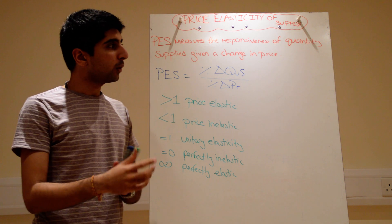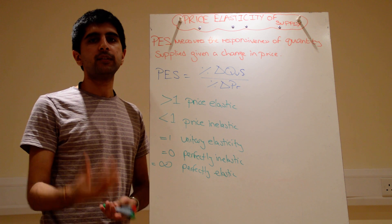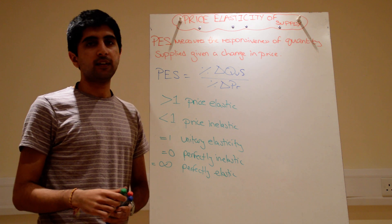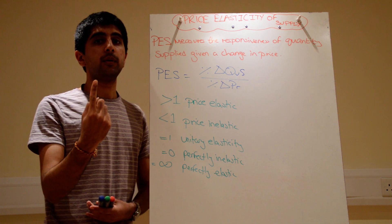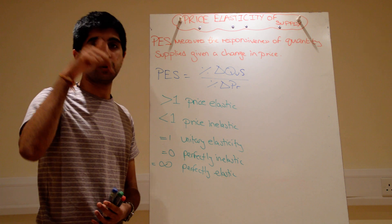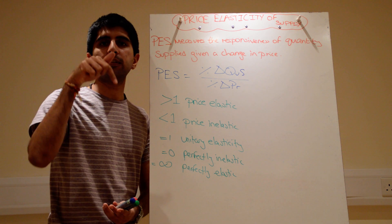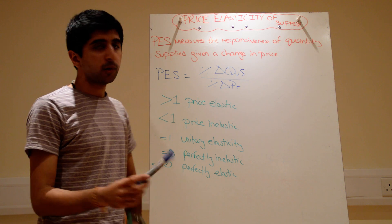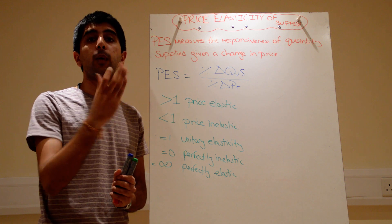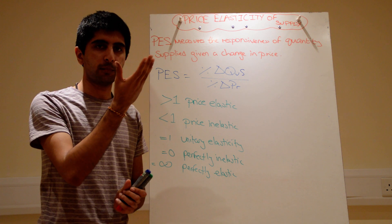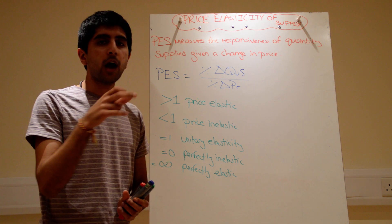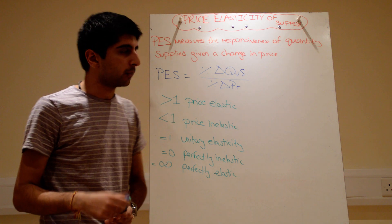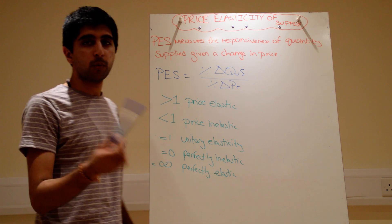We know that the law of supply states that when the price of a good goes up, the quantity supplied of that good will also go up, and vice versa. When the price falls, quantity supplied will fall — that's the law of supply. But now we want to know how much will quantity go up when the price goes up, and how much will quantity go down when the price goes down.